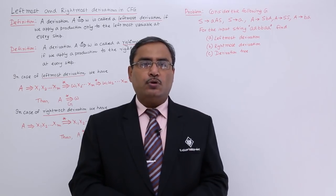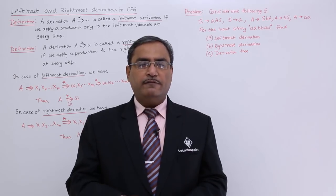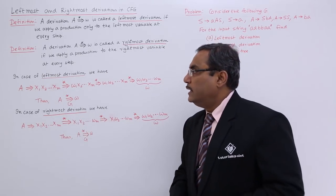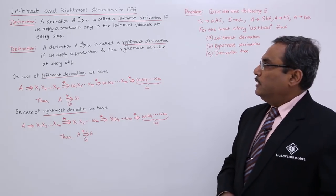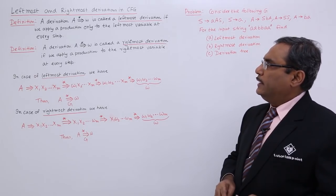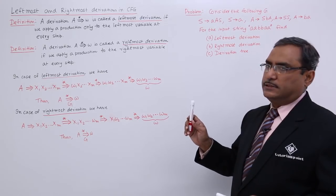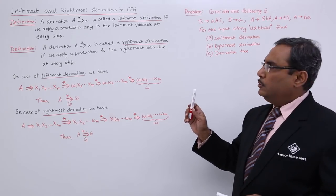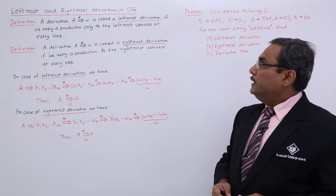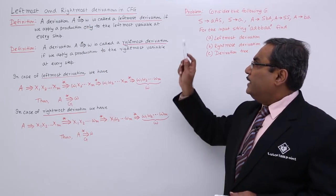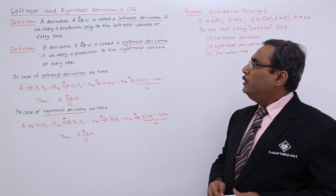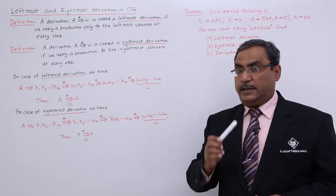This session is on leftmost and rightmost derivations in context-free grammar. A derivation A produces W using multiple production rules following grammar G is called a leftmost derivation if we apply a production only to the leftmost variable at each step.